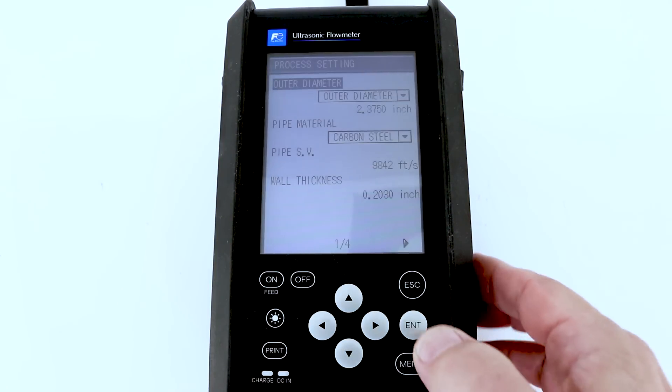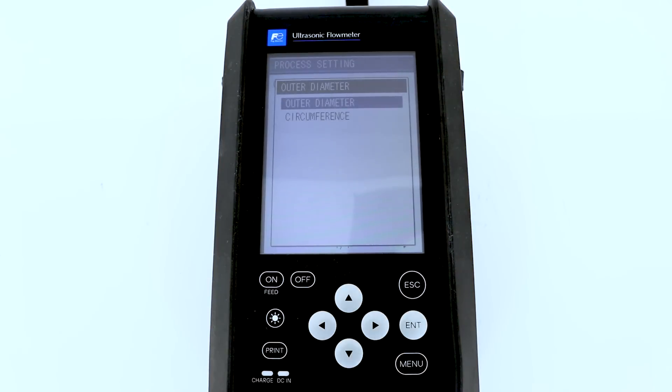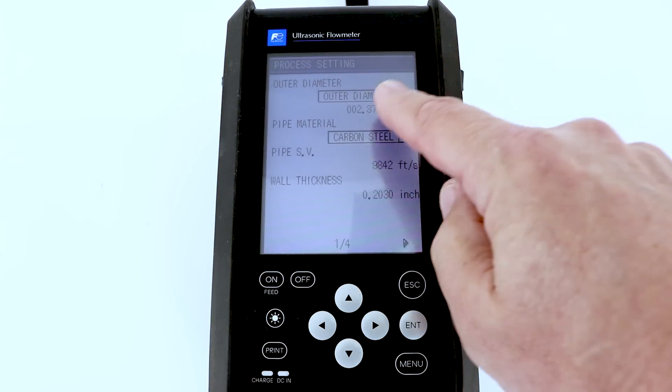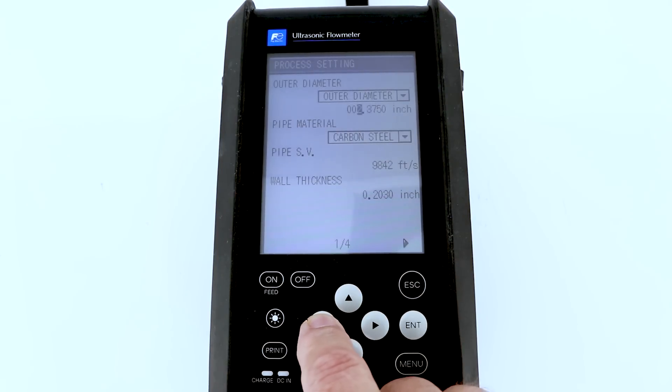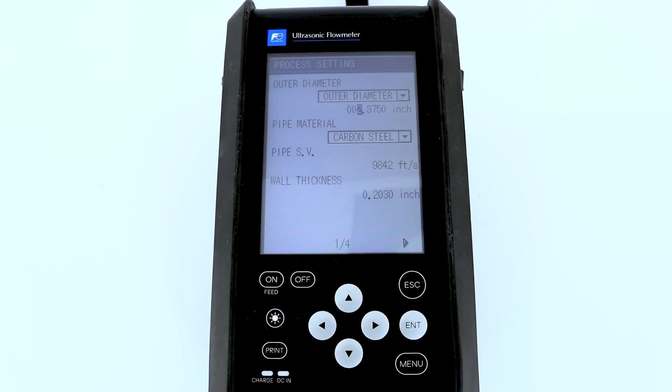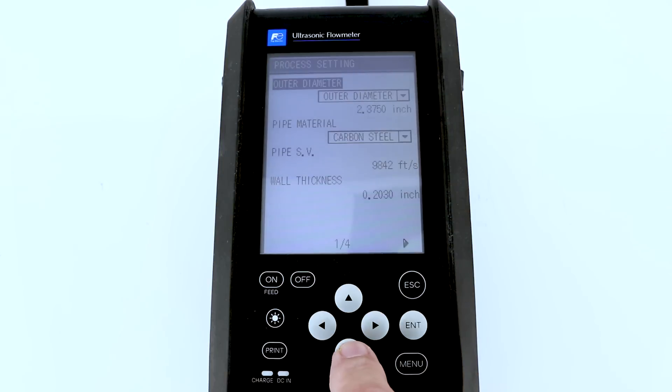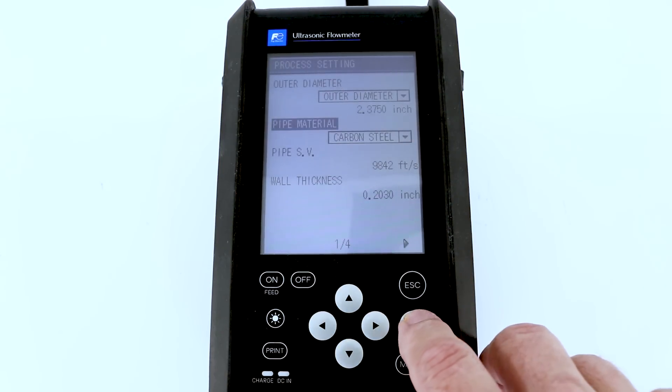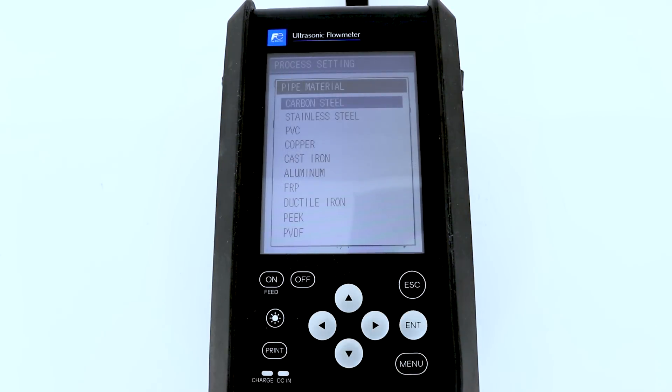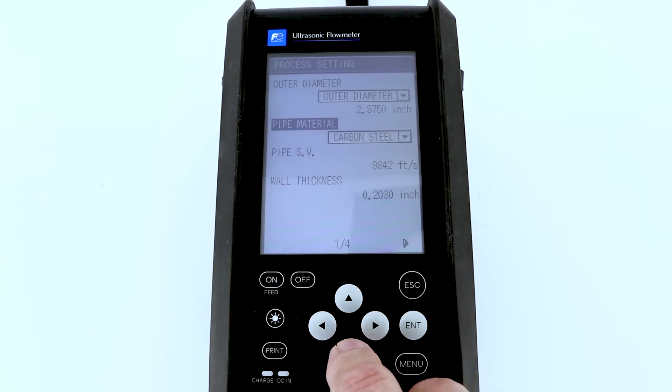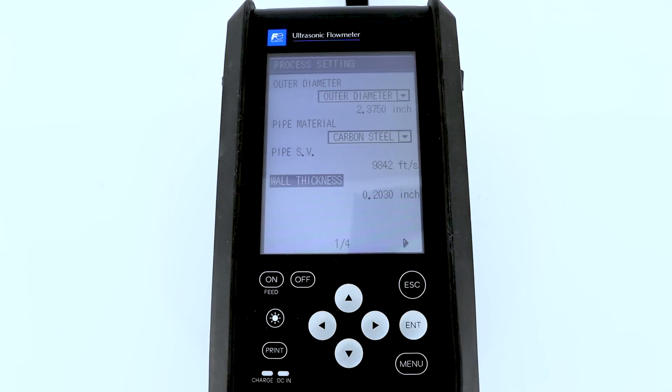So then we will hit the enter button. You have the choice of outer diameter or circumference, we will select outer diameter, hit enter. And then this will allow you to move the cursor right and left to change the dimension. We've set this up for a 2 inch schedule 40 carbon steel pipe. Now, we're going to go down to the pipe material. The pipe material is another drop down menu. We've selected carbon steel. And as you scroll down, there's a whole host of different pipe materials. After that, you will go down to the wall thickness. Using the ANSI pipe chart for a schedule 40, the wall thickness is 0.2030. We've programmed that in and we're all set to go.